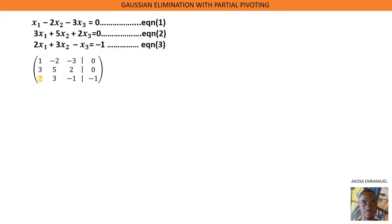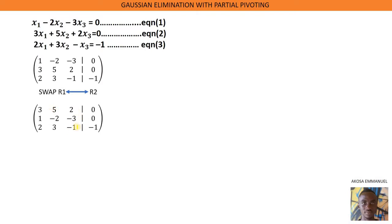What do we do? We swap row 1 and row 2. And if we swap row 1 and row 2, this will be our new matrix. Now 3 is our pivot element, so we can use 3 to reduce the entries below it to 0.